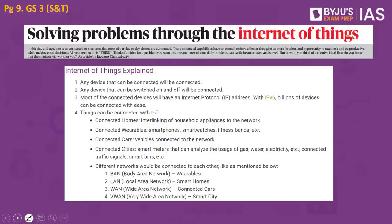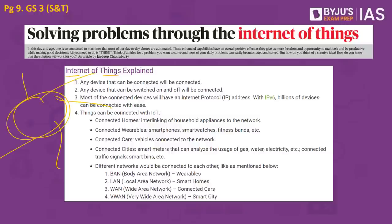Let's get started and look into the first article: solving problems through the Internet of Things. The article speaks about applications of IoT, the challenges associated with it, and the way forward to ensure minimal security threats. As the name denotes, Internet of Things combines Internet — the platform where multiple interrelated computing devices, mechanical and digital machines, objects, animals, or people — each given a unique identifier — transfer data amongst each other using the Internet.